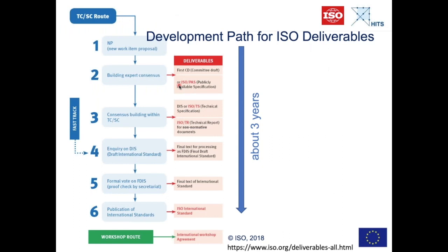The technical specification addresses work still under technical development — interesting for research projects where the method is still evolving but has a certain level of maturity. People can agree on a standard without wanting it to be completely fixed for the next five years. You might transfer it to a real international standard later, or keep it as a technical specification. It's a lightweight standardization in the ISO world that is still normative. The technical report provides a more state-of-the-art, informative view — somewhat comparable to a scientific publication about standards in a certain field.